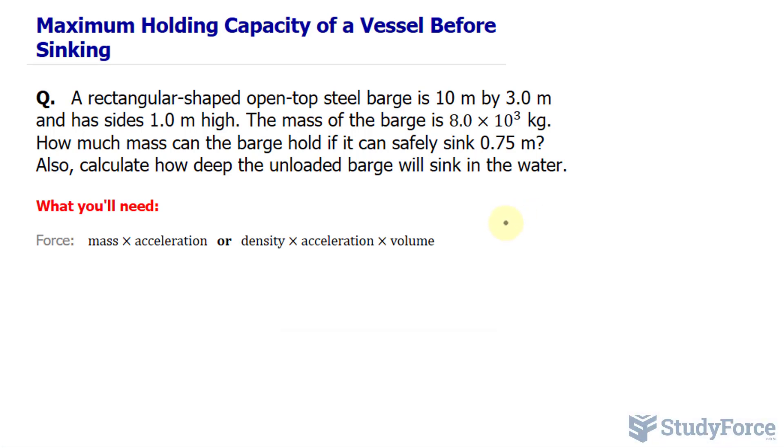So let's go ahead and find the volume of a rectangular prism. That's easy to do. It's length times width times height. So we have length of 10, width of 3, that's 10 × 3 × 0.75.